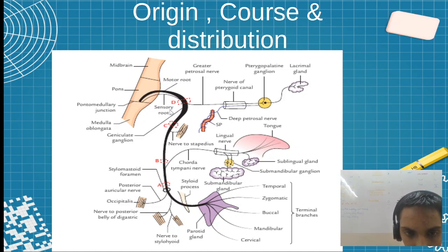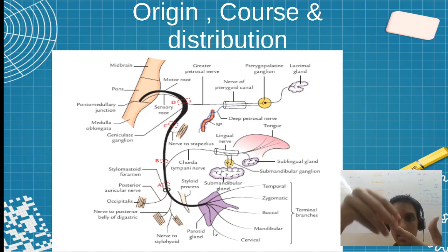The motor root goes directly to the styloid process. Before that we go through the stylomastoid foramen, then into the styloid process, then five branches. I told you before in the parotid gland: temporal, zygomatic, buccal, marginal mandibular, and cervical.